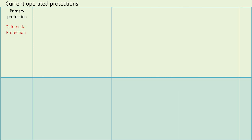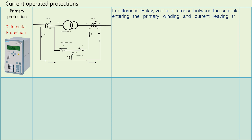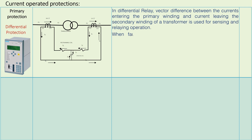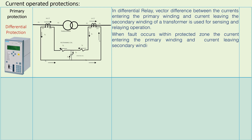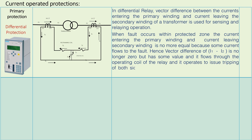Current operated protection — Differential Protection: In a differential relay, the vector difference between the current entering the primary winding and the current leaving the secondary winding of a transformer is used for sensing and relaying operation. When a fault occurs within the protected zone, the current entering the primary winding and the current leaving the secondary winding are no longer equal because some current flows to the fault. Hence the vector difference of I1 minus I2 is no longer zero but has some value, and it flows through the operating coil of the relay, which operates to issue tripping of both side circuit breakers.